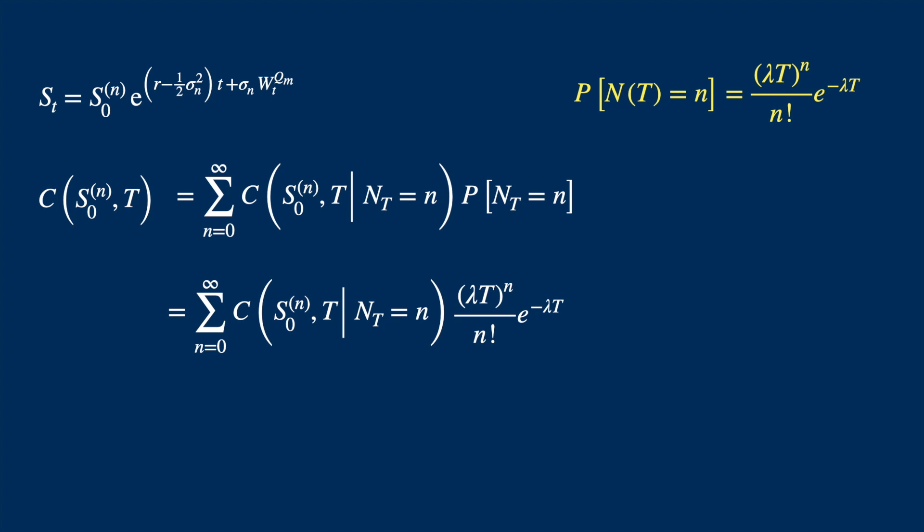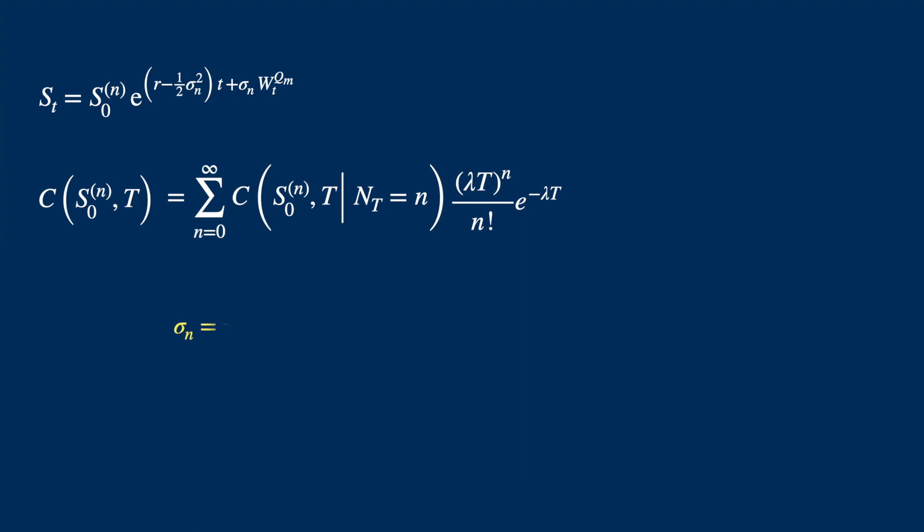And let's recall that sigma underscore n represents the total volatility per unit time due to diffusion and jump. S underscore n is the scaled version of the initial stock price to account for some of the effects of the jumps. And also remember we define k as the expected value of the relative jump size.